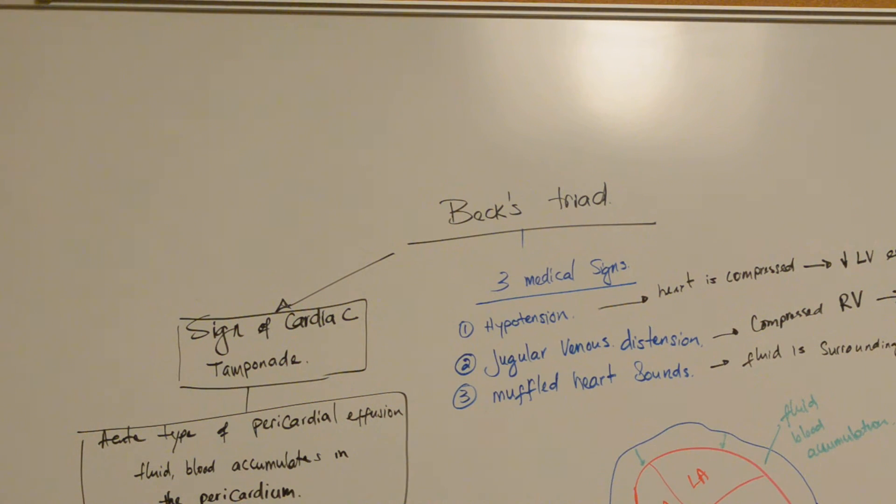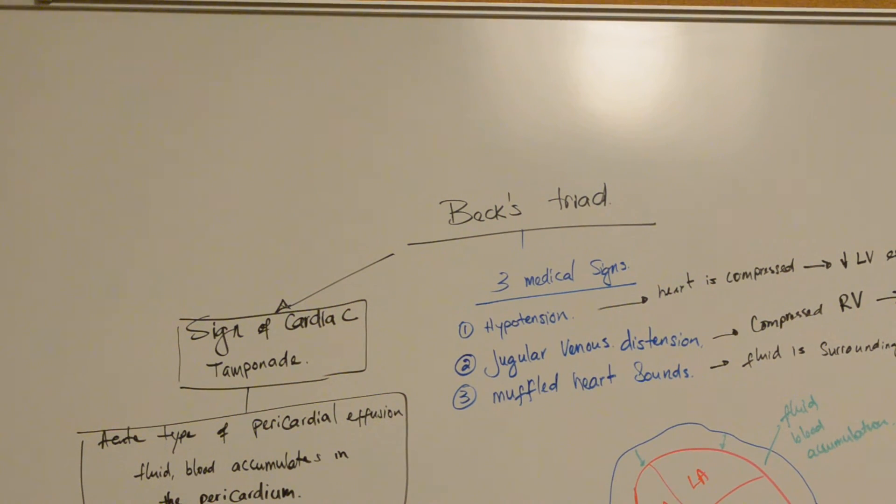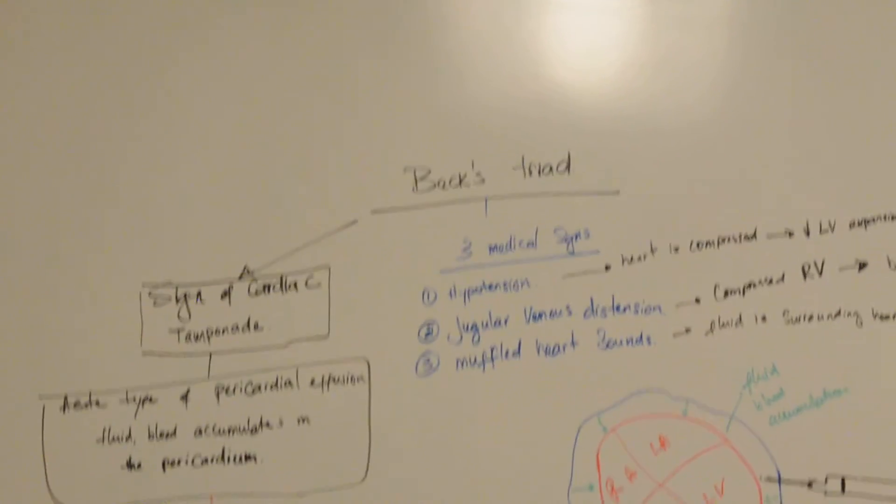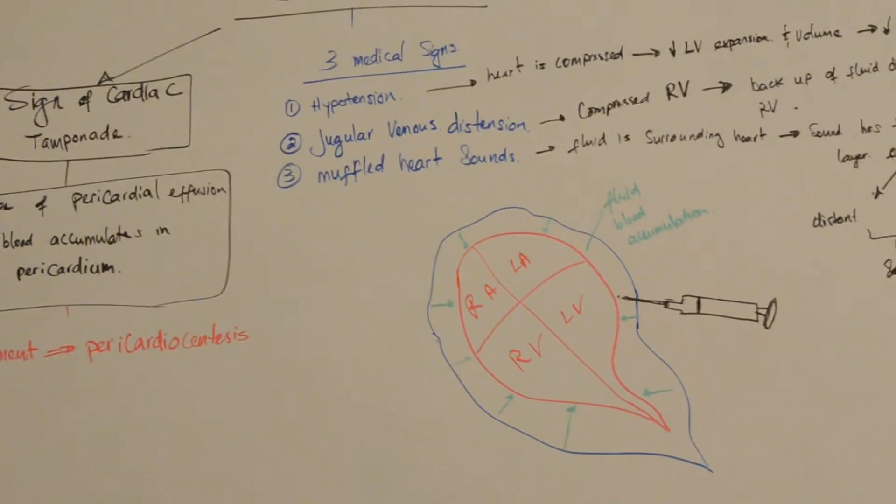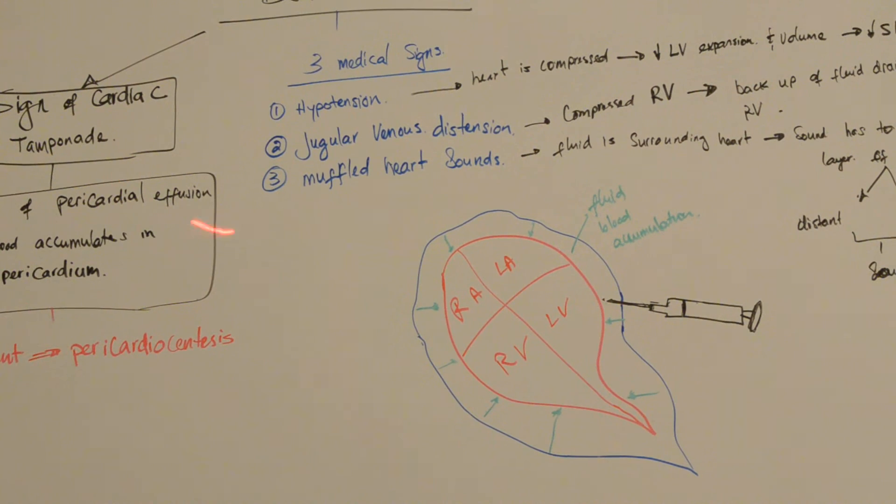It is an acute type of pericardial effusion in which fluid, pus, blood, clots, or gas accumulates in the pericardium. The pericardium, which is a sac right here, is the sac in which the heart is enclosed.